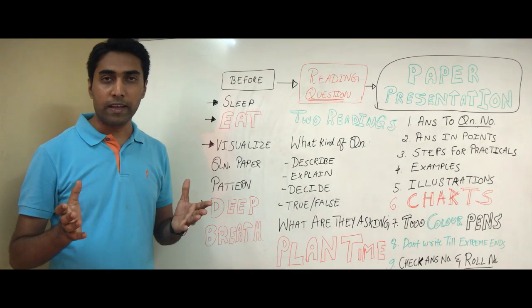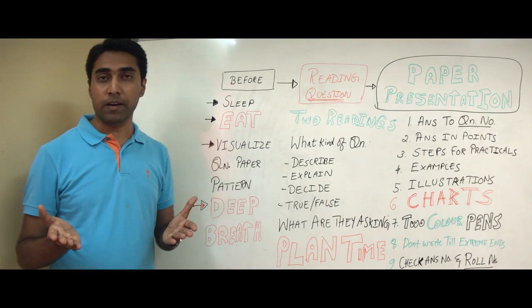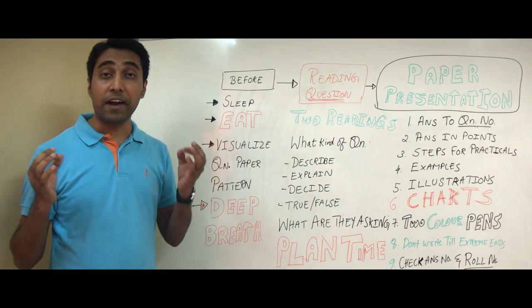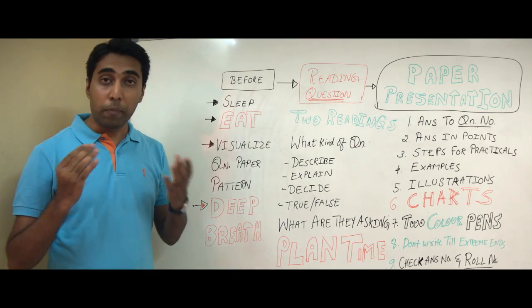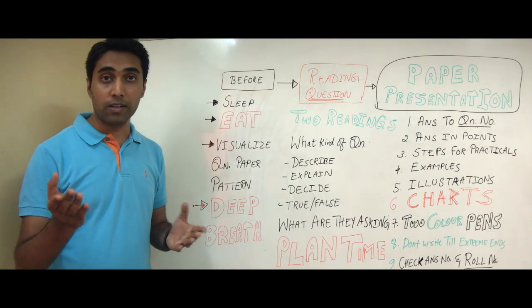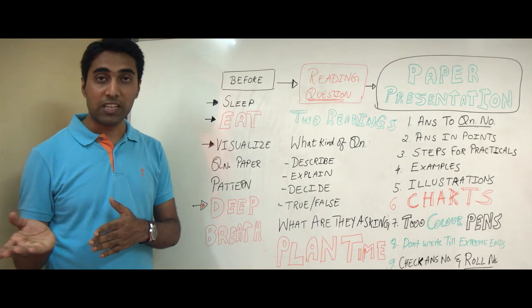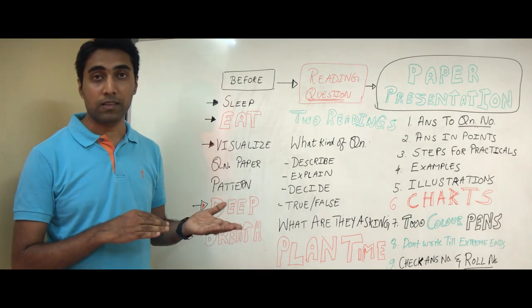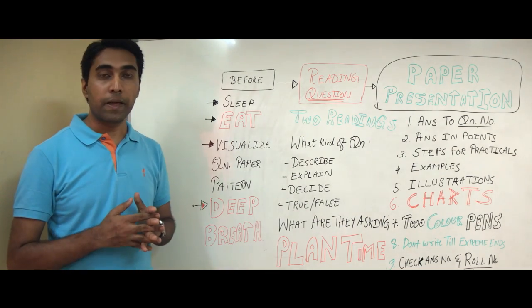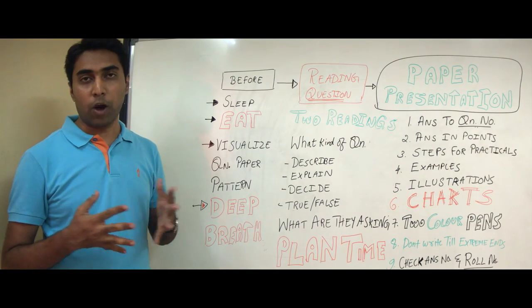First thing is you must write this phrase 'answer to question number' whether it is theory paper or practical paper, in every answer in every page. Ensure this phrase is there. If you are going to the next page, ensure you write 'continued answer to question number so and so'. Why? The person who is correcting your paper is correcting at least 150 papers. To make his life easier and to ensure that there are no mistakes, that he is giving you marks for some other question or he thinks it's some other answer, please write this.